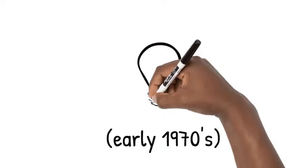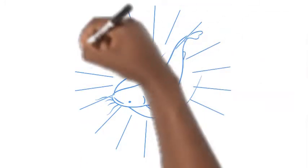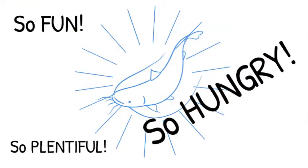However, in the early 1970s, some folks thought that they had this great idea. They introduced the blue catfish into the Chesapeake Bay. It was fun to catch, it was prolific, and unfortunately, it was very hungry.